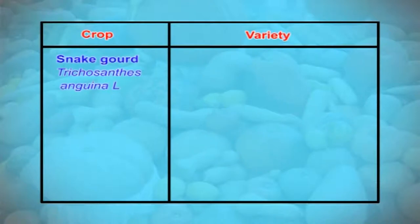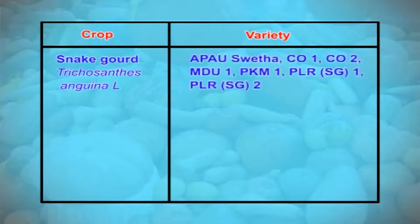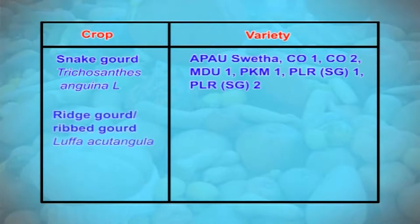In snake gourd, which is botanically known as Trichosanthes anguina, the common varieties are APAU Shweta, Ko-1, Ko-2, MDU-1, PKM-1, Palur Snake Gourd 1, and Palur Snake Gourd 2.